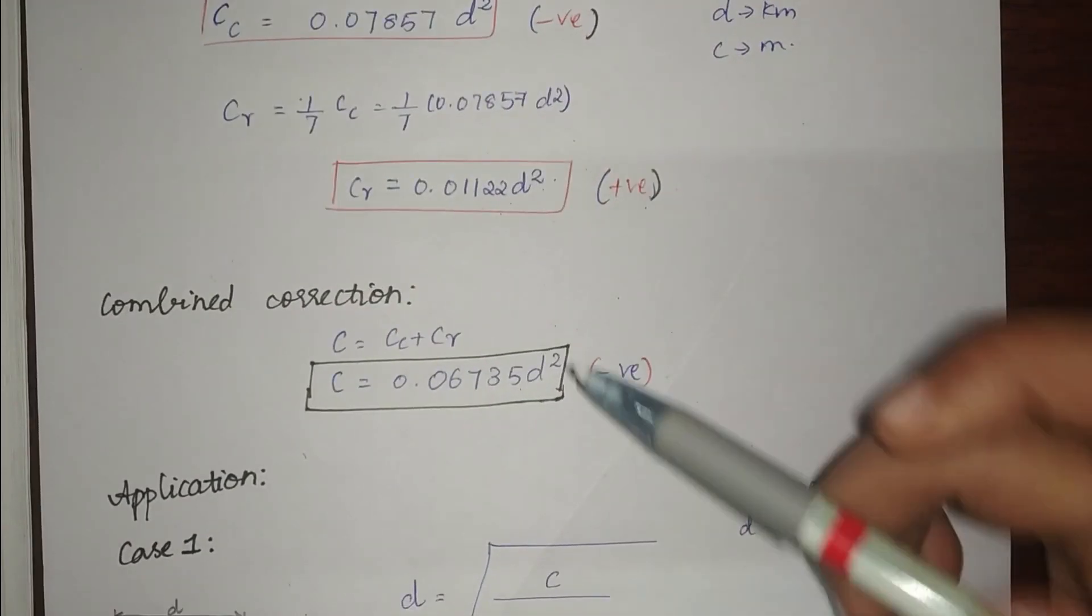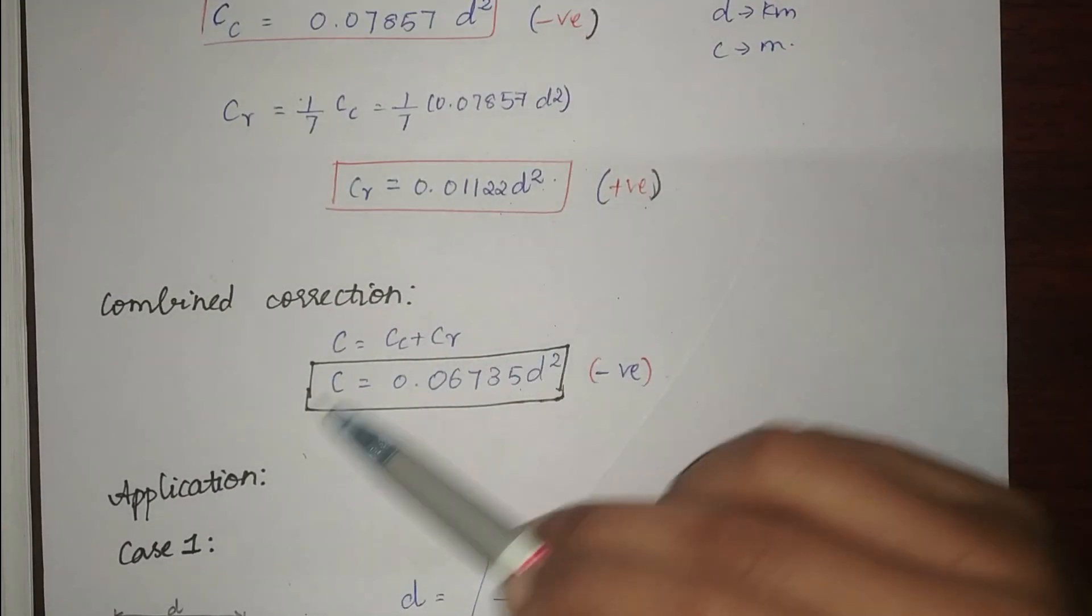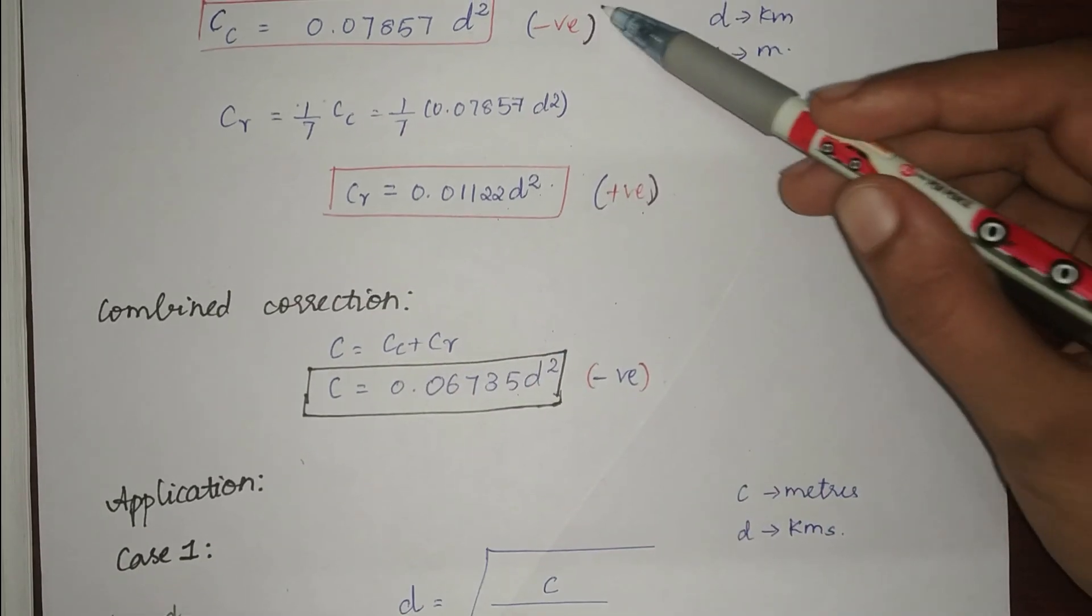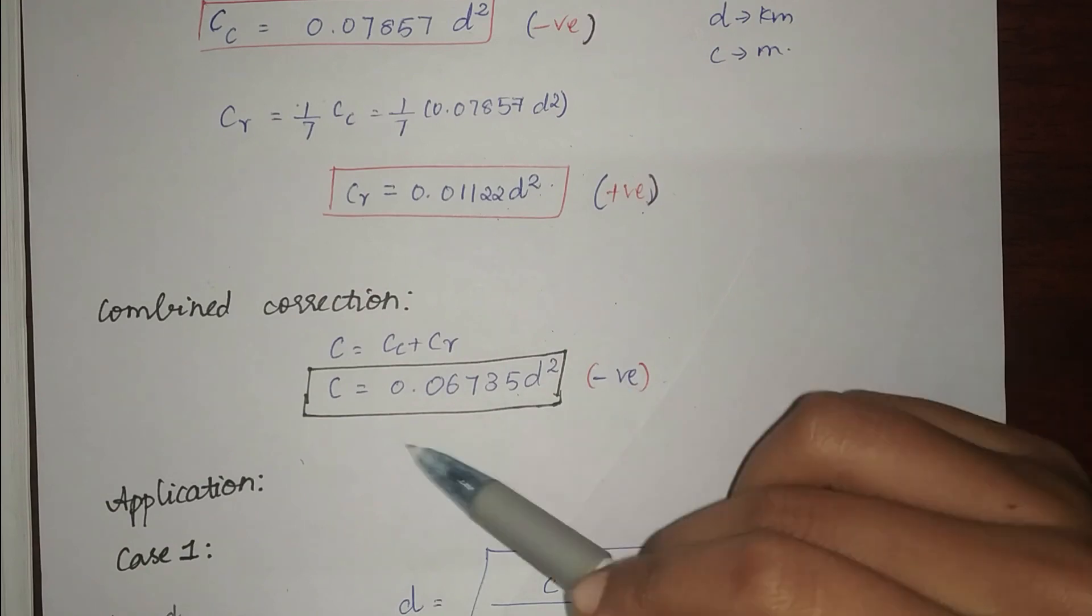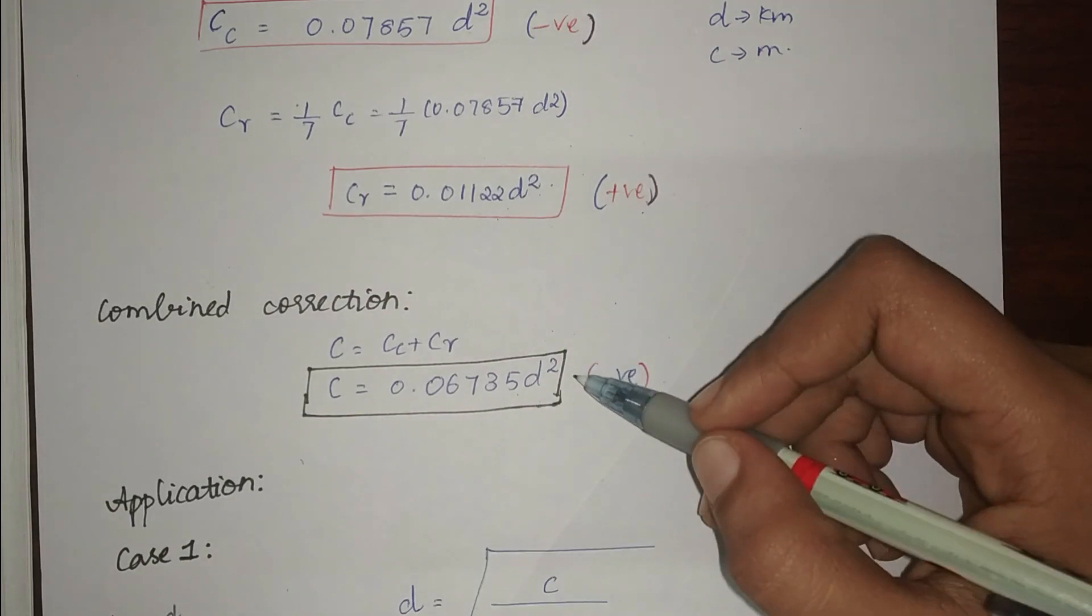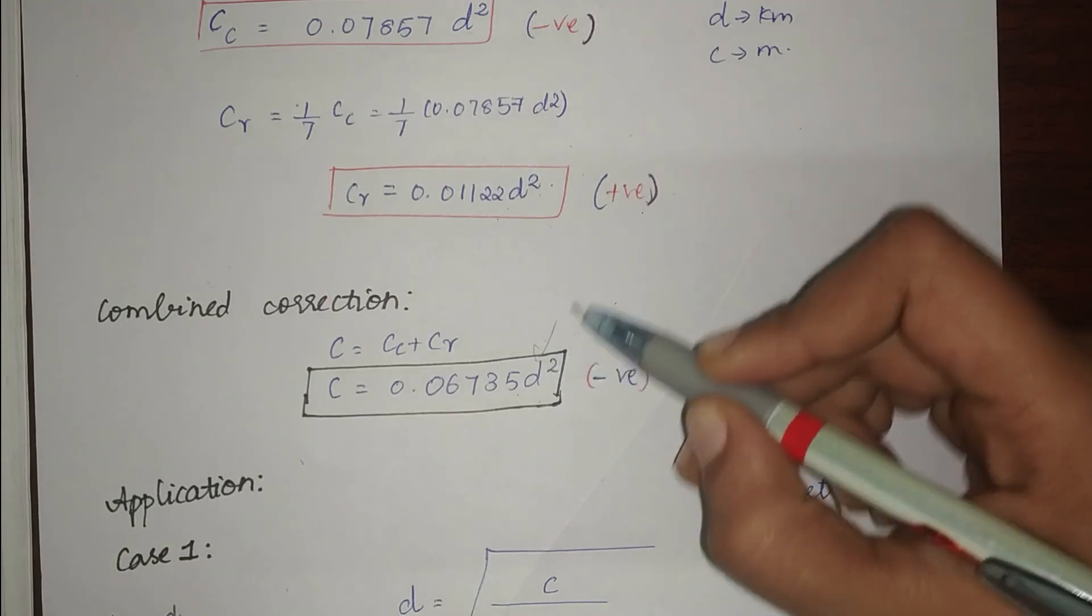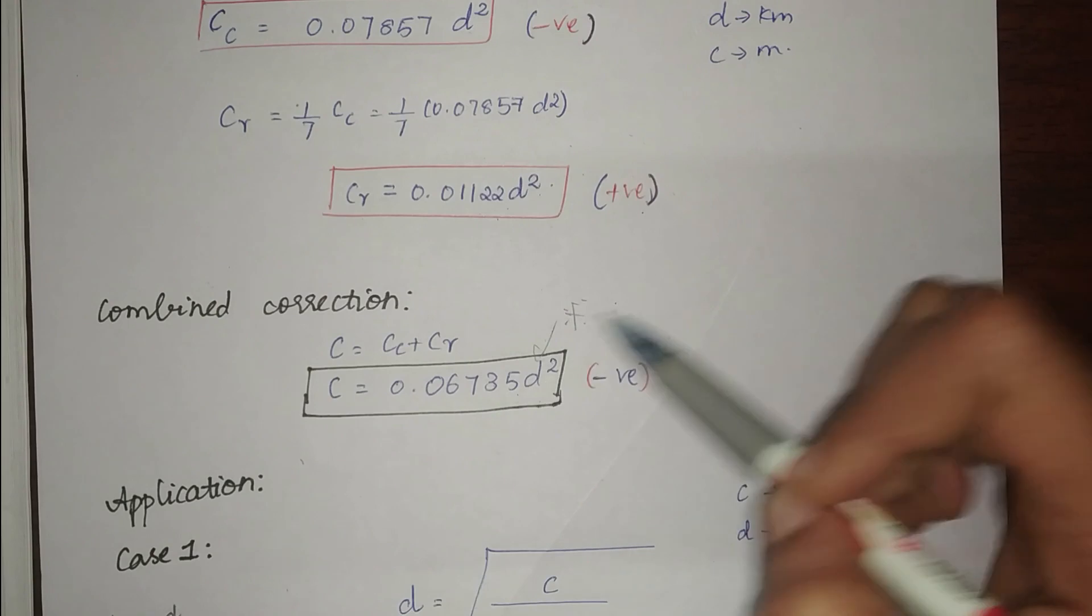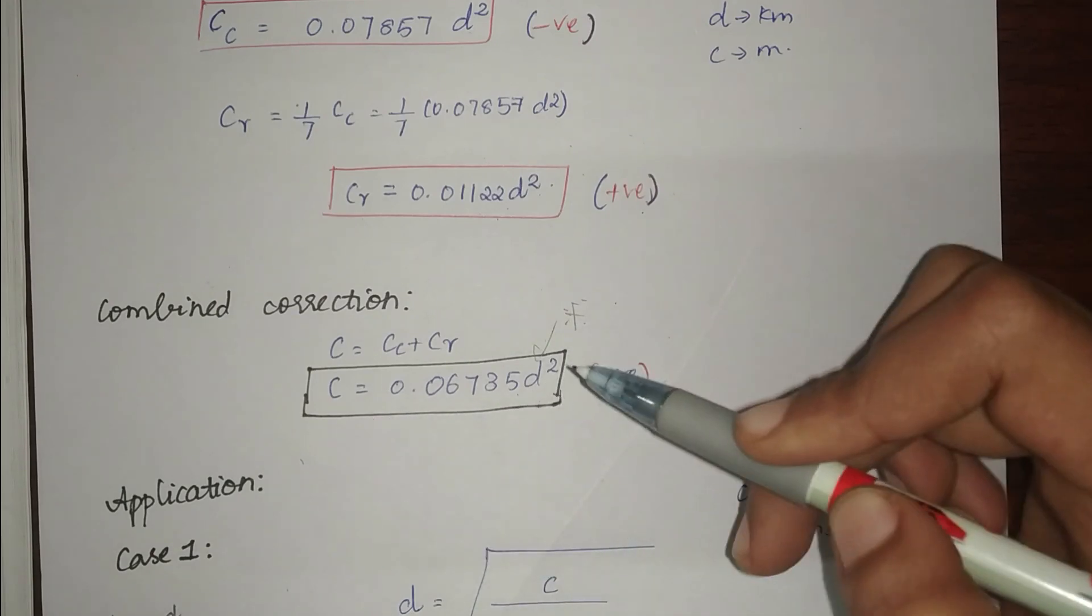And next comes combined correction. Combined correction is where we add both the corrections. And since they both have different signs, we will find the difference. And the answer is given here. This is a very important formula. Try to keep this in mind. We know the answer or the formula for combined correction. How can we use it? What are the applications of combined correction?